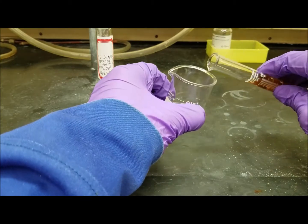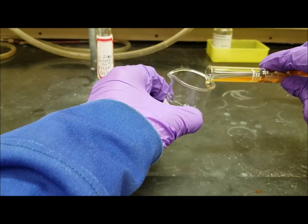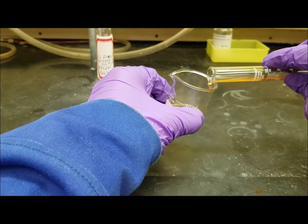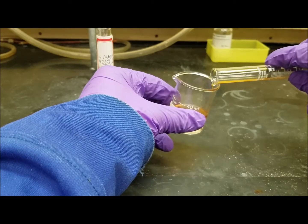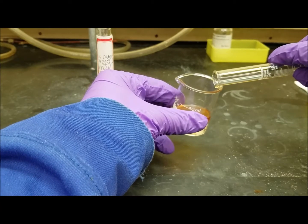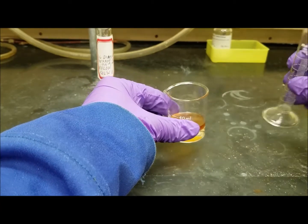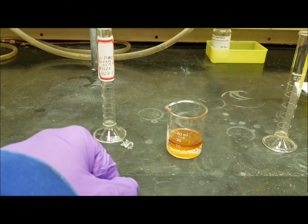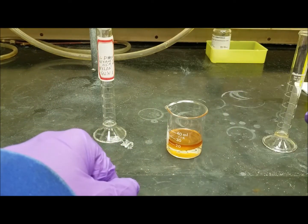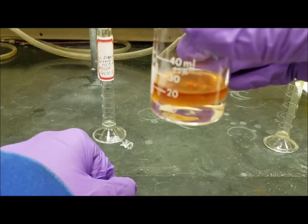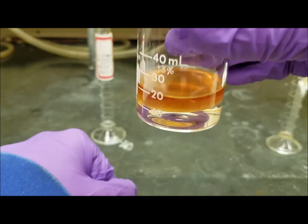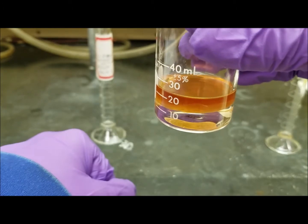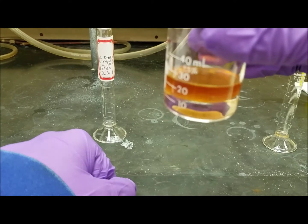So we should see two phases as I carefully pour this down the side. Yep. So now I see two phases, the adipoil chloride layer on top. And if you look, there's a little bit of a film right there in between the two layers.